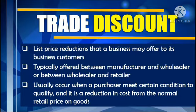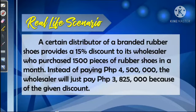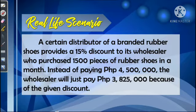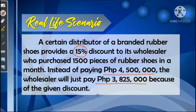Let us use this real-life scenario. A certain distributor of branded rubber shoes provides a 15% discount to its wholesaler who purchased 1,500 pieces of rubber shoes in a month. So instead of paying 4,500,000 pesos, the wholesaler will just pay 3,825,000 pesos because of the given discount. In this scenario, the 15% is what we call the trade discount rate, the 4,500,000 pesos is the list price, and 3,825,000 pesos is the net price.